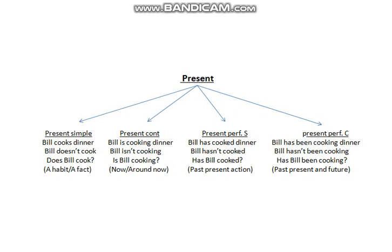For the present continuous, for example: 'Bill is cooking dinner.' If you notice, we have the verb to be plus the verb plus the -ing form. So in the present continuous we use: am/is/are + verb + -ing. The negative form is 'Bill isn't cooking,' and for questions you invert: 'Is Bill cooking?' — and you do that with all pronouns.